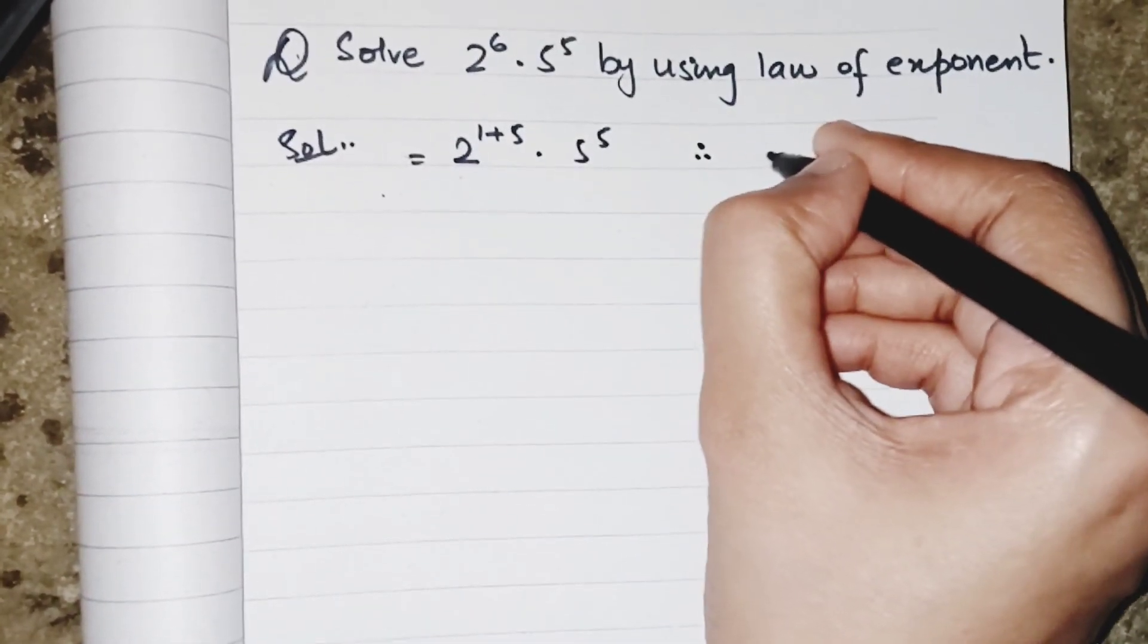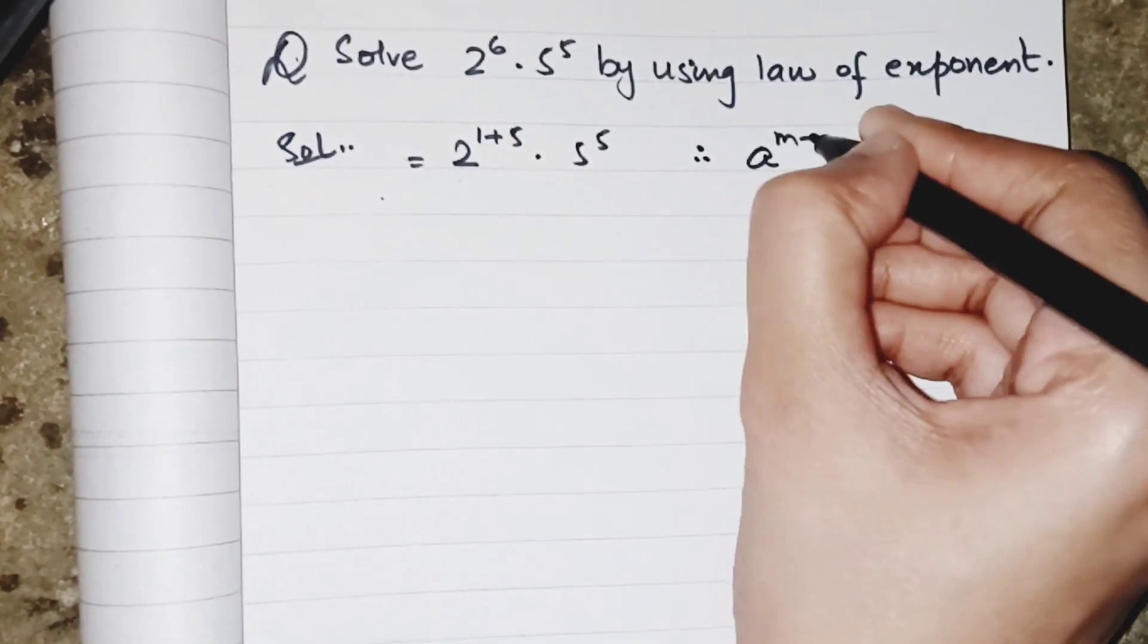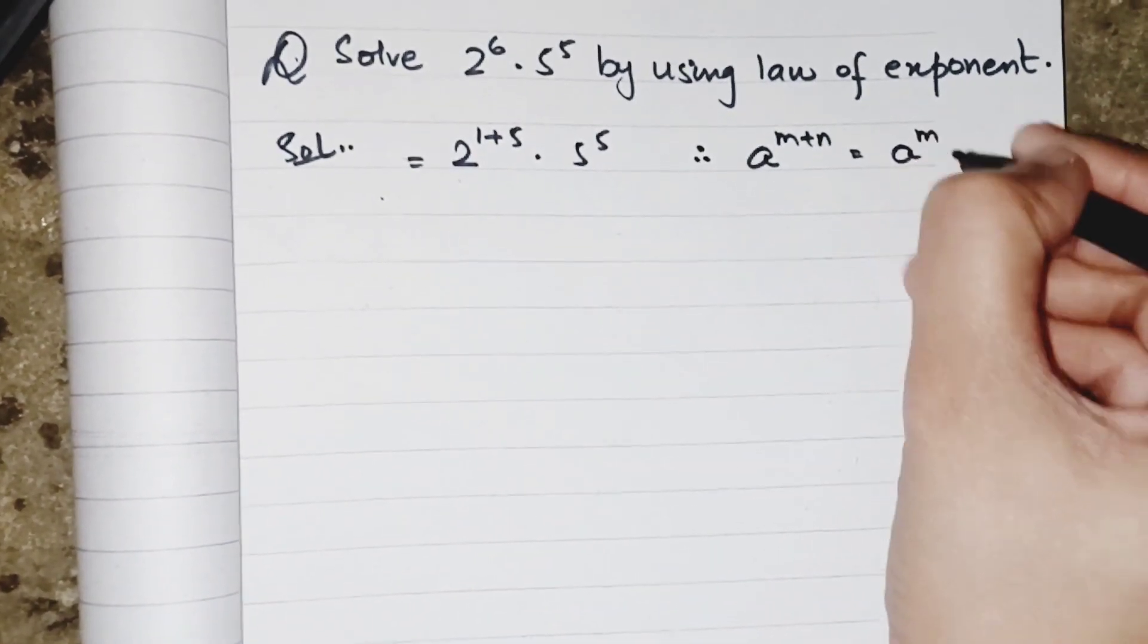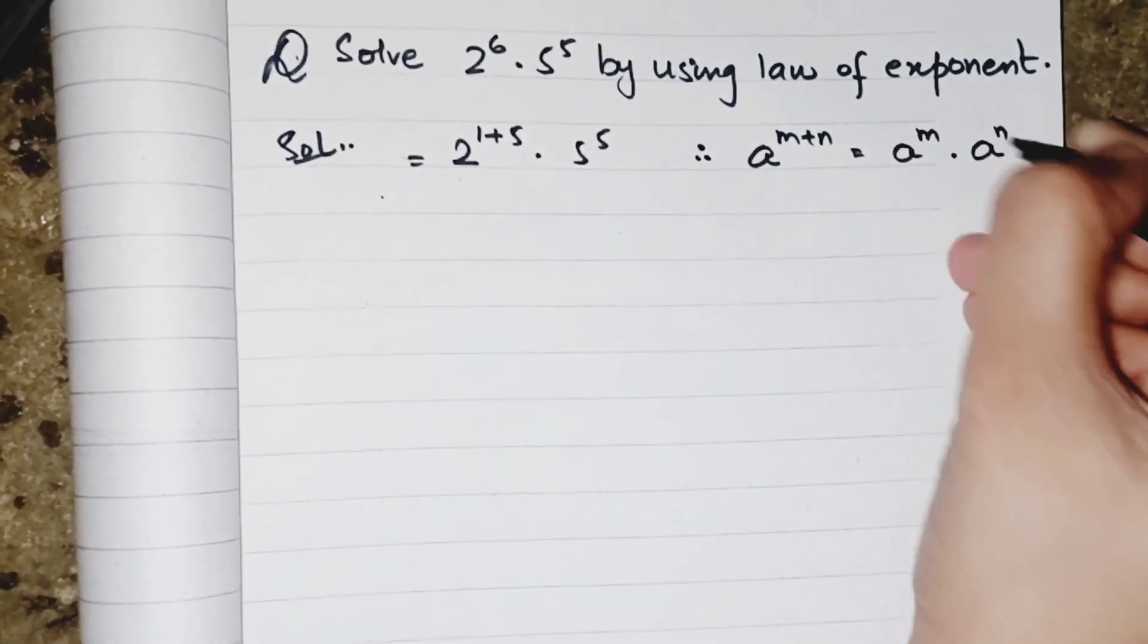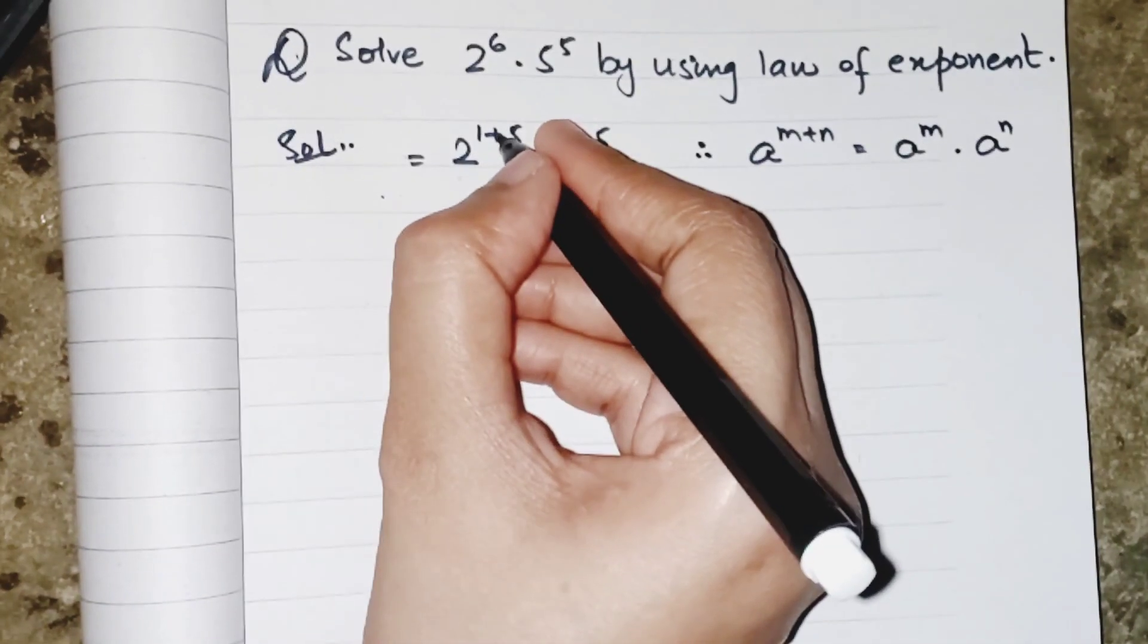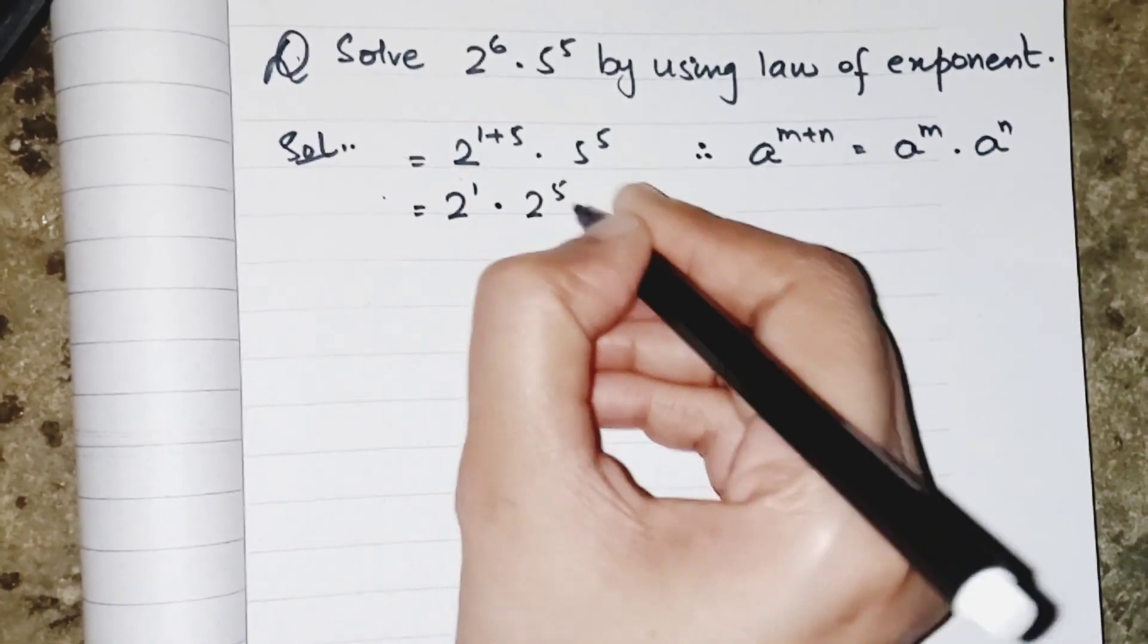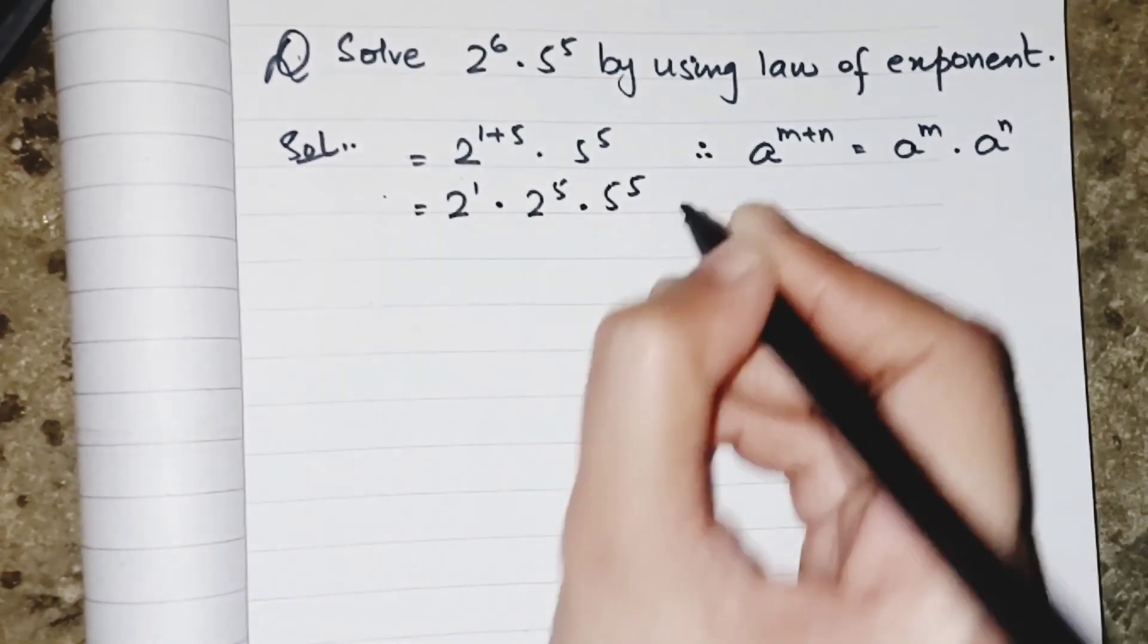Because we know that whenever a same base has two powers which are added or subtracted, it will be distributed to the base. So in place of this one, I can write 2's power 1 multiplied by 2's power 5 multiplied by 5's power 5.